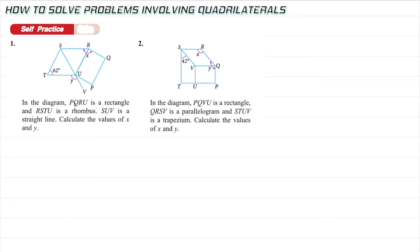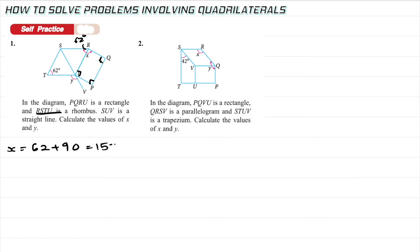How do we solve problems involving quadrilaterals? In the diagram, PQRU is a rectangle — so all its interior angles are 90 degrees. RSTU is a rhombus — remember that opposite angles of a rhombus are equal, so if one angle is 62, the opposite is also 62. To find x: x = 62 + 90 = 152 degrees.